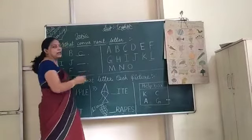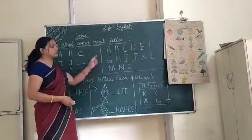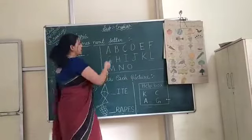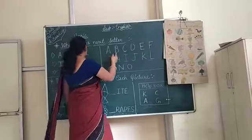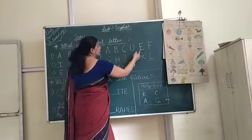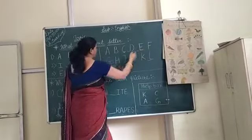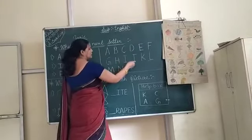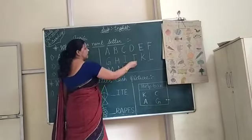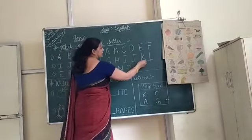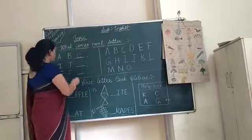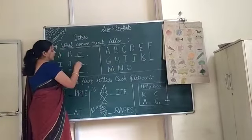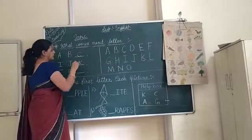Next letter — how do we find out? Again we speak some letters: A, B, C, D, E, F, G, H, I, J — and J comes after, so the next letter is K. So we can write K letter here.